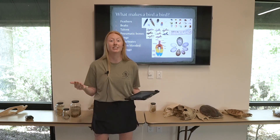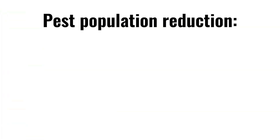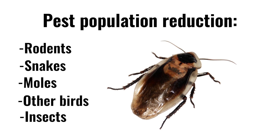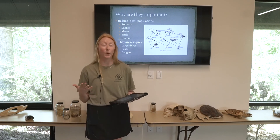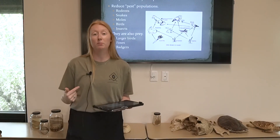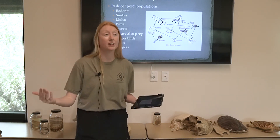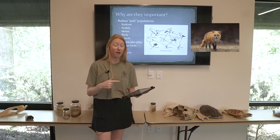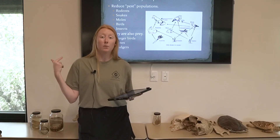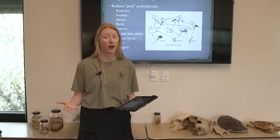So why are birds actually important? For one reason, they reduce pest populations. Pests include rodents, some species of snakes, moles, other birds, and insects — all of those populations can increase rather quickly if birds were not around. But birds can also be prey themselves. Smaller birds often find themselves being prey to larger birds such as hawks or owls, and also to foxes and weasels, which are ferocious ground predators.